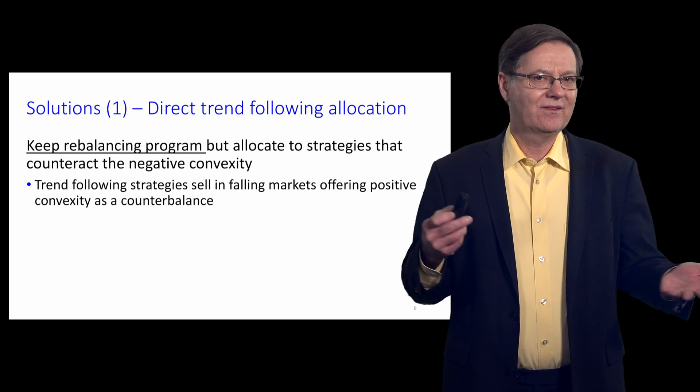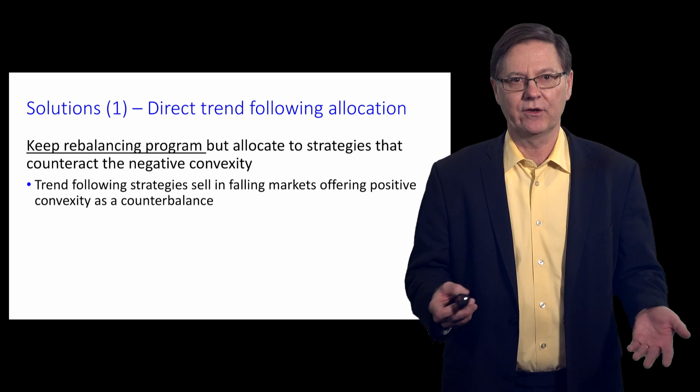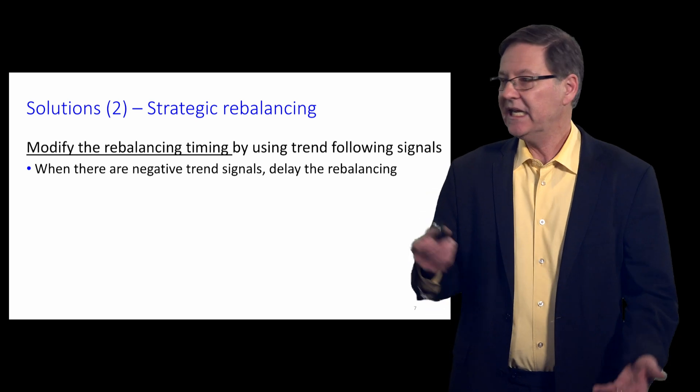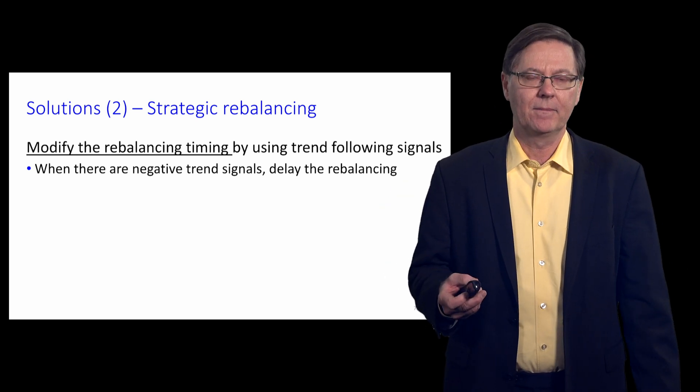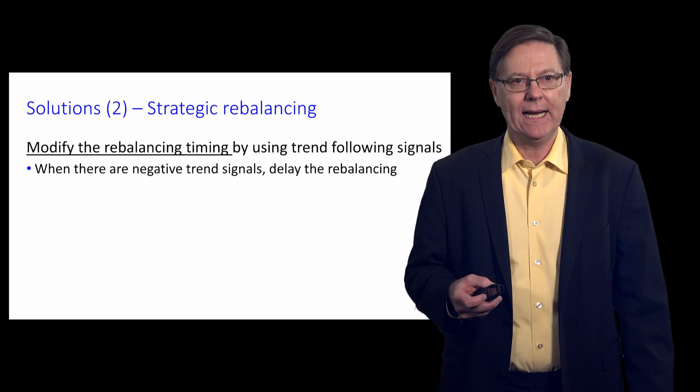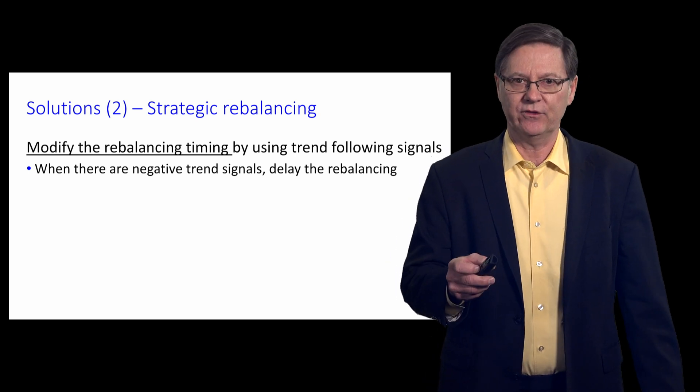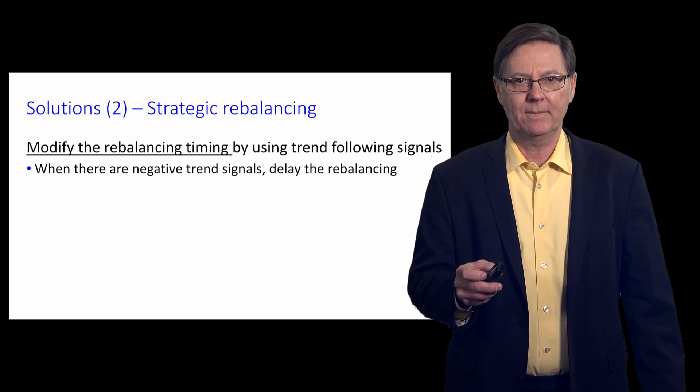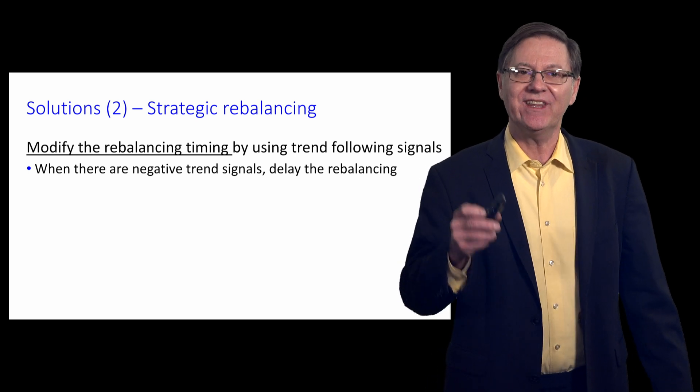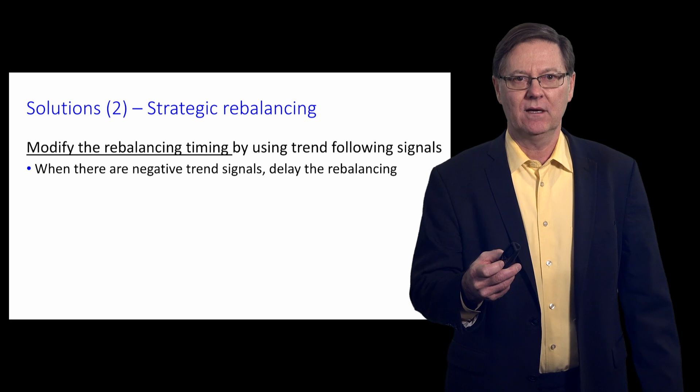So this is a possible solution, but there's another solution, and it's called strategic rebalancing—indeed, the title of the paper. The idea here is to abandon the mechanical rebalancing. Use the same signals from trend-following, but instead of a direct allocation to trend, use the signals to inform the timing of the rebalancing.